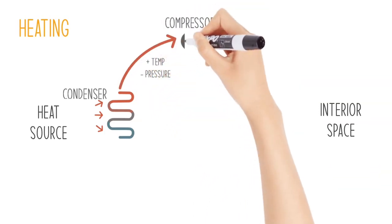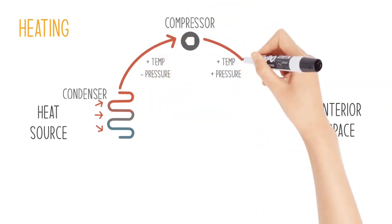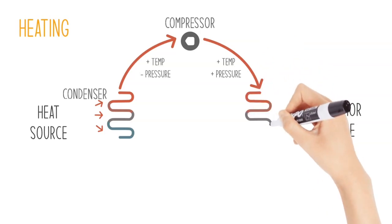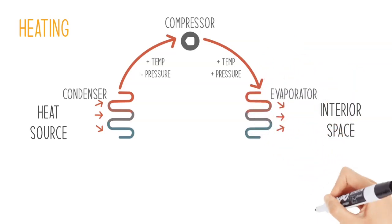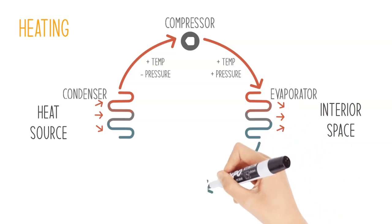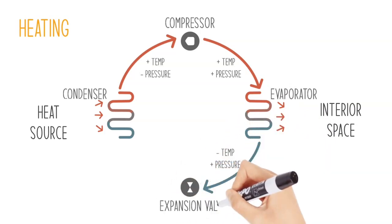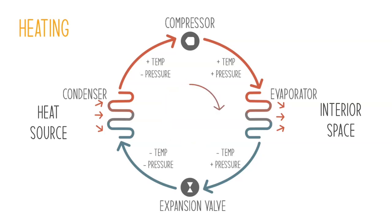Now we have a high pressure, high temperature refrigerant that gives the thermal energy to the space through the evaporator coil. Then the refrigerant flows to the expansion valve, where it releases pressure to make it a low temperature, low pressure state. From there, it is ready to take heat again. The cycle goes on and on to heat the space.